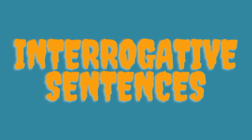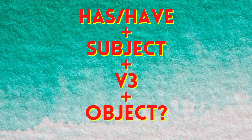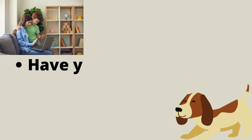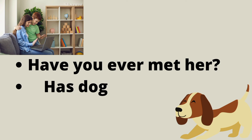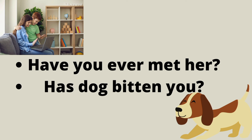Then the interrogative use of the tense. Here we will use has or have in the beginning, then the subject, then the third form of the verb. For example: 'Have your matter...?' 'Has the dog bitten you?' So these are some examples by which I have tried to clarify the uses of has and have in an easier form.